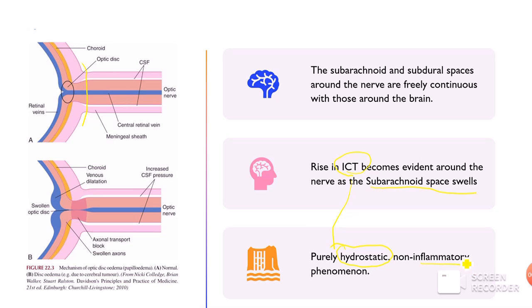Papilledema is purely hydrostatic, occurring because of raised ICP. This happens because the subarachnoid and subdural spaces of the brain are in direct communication with the optic nerve, as these spaces and meninges are present around the optic nerve up to the lamina cribrosa.